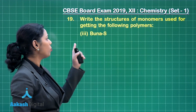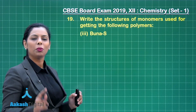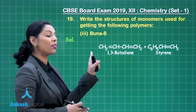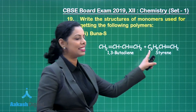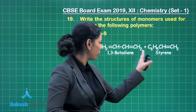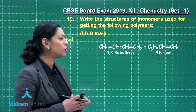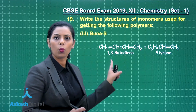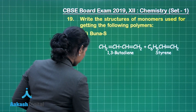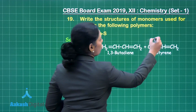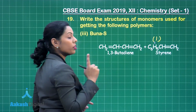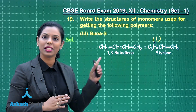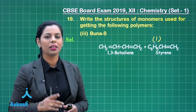The next polymer is Buna-S, and the monomers in this case are 1,3-butadiene and styrene. If you write the names of these two, you will get the complete one mark. Total three marks you will obtain if you choose this question as your internal choice.